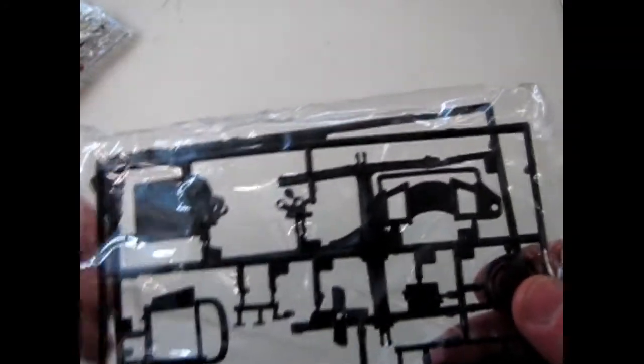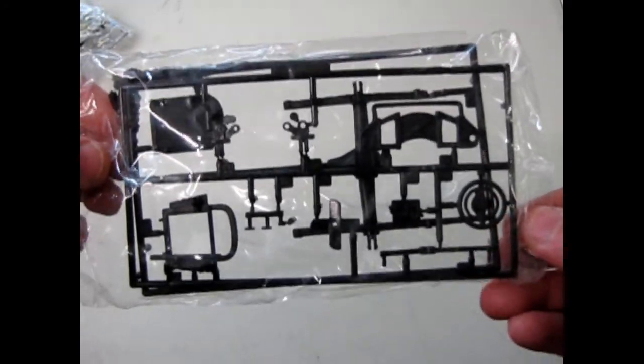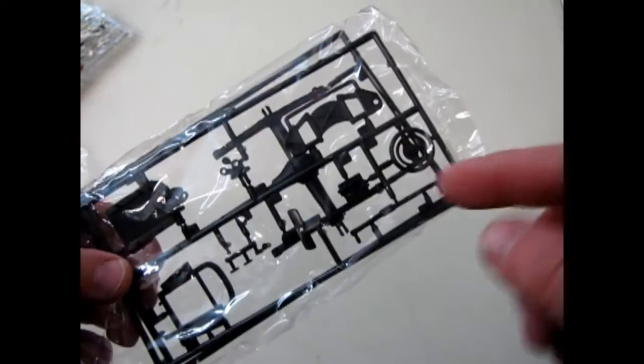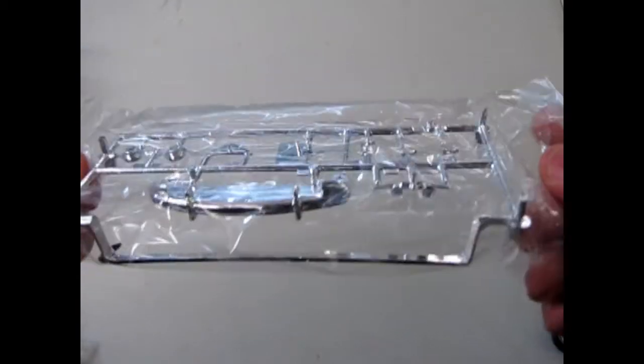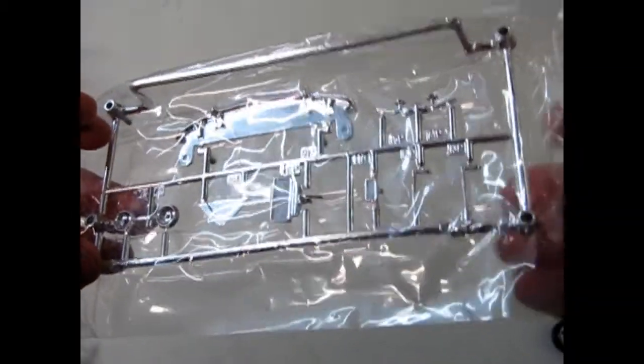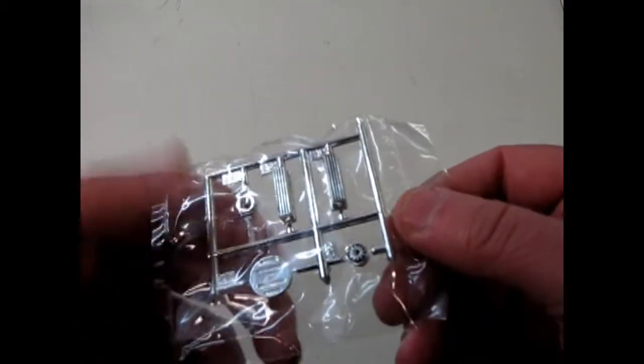These are the frame and undercarriage pieces as well as the steering wheel, all painted in black or possibly molded in black. Then we've got some chrome here. The front bumper, some door handles and headlights, as well as hood ornament things.